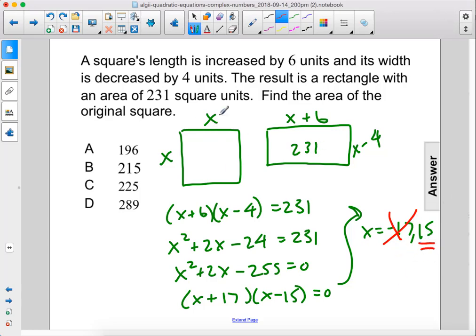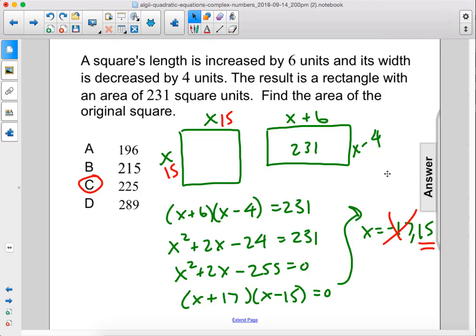So the area of the square would be 15 times 15 which is 225. The answer is C.